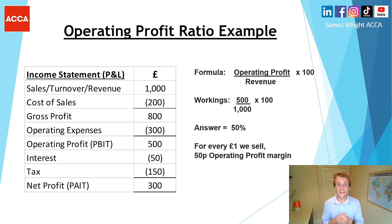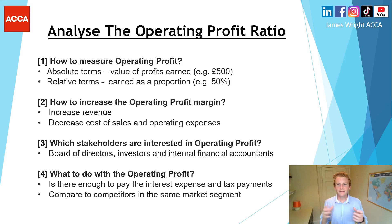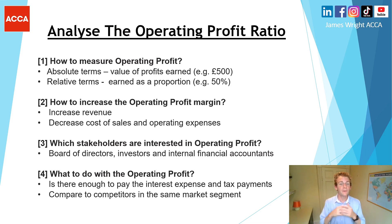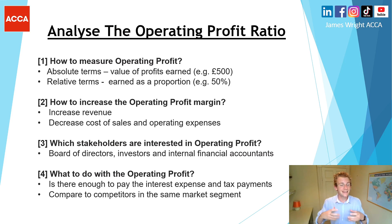Applying the figures: taking £500 for the operating profit, dividing by the sales revenue as shown on the screen, gives us a healthy answer of 50% — a reasonably high percentage. What does that actually mean? For every one pound of product or service that we sell, that is generating 50 pence worth of operating profit margin. Now we need to think about how we measure and interpret this figure.